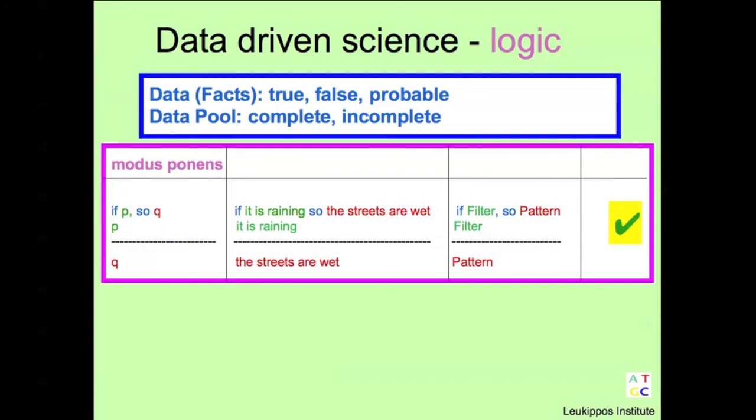As in our previous example, we know if it's raining, so the streets are wet. We observe it is raining. We conclude the streets are wet. This is true since it's impossible to find the contrary example.